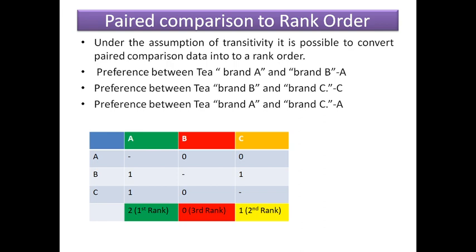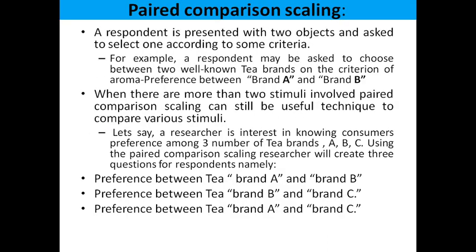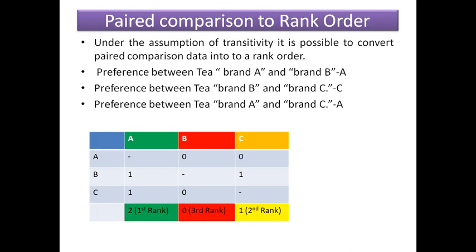Paired comparison data can be transformed to rank order because it is a kind of ordinal scale. Under the assumption of transitivity, it is possible to convert paired comparison data into a rank order. For example, one respondent's responses are: between Brand A and B — A is preferred; between Brand B and C — C is preferred; between Brand A and C — A is preferred.